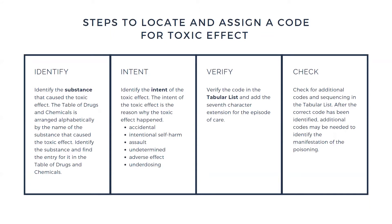The code for each intent is located in one of the six corresponding columns, and this format is similar to what you saw in the Table of Neoplasms. The main term is on the left-hand side of the columns, and there are multiple columns that identify the different intentions for the toxic effect.